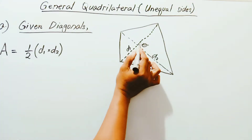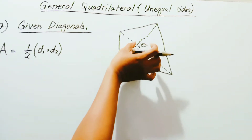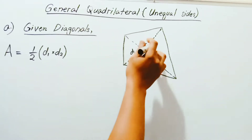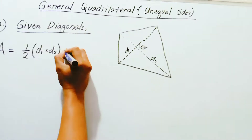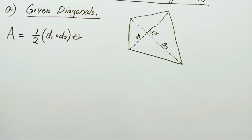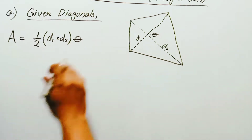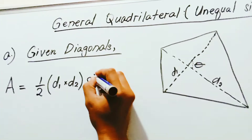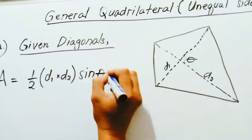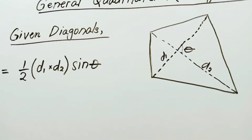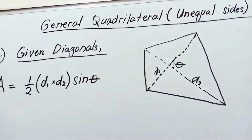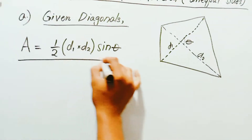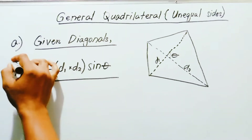But not only that — we need to consider also the angle between these two diagonals. Take note: this angle is not 90 degrees. There's a certain value of angle for these two diagonals, and this will be theta. So the full formula includes sine theta. This is the area for this particular diagram: A = ½ × D1 × D2 × sin(θ).